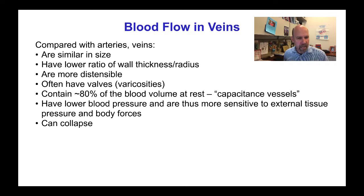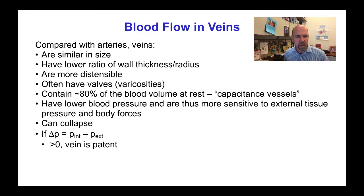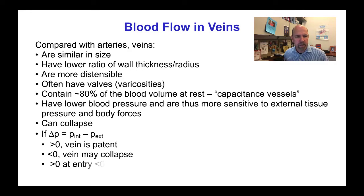Veins can collapse under negative pressures. If the pressure difference between the inside and the outside of the vessel is greater than zero then the vein is open or patent. If it's less than zero then the vein may collapse. If it's greater than zero at the entry but less than zero at the exit then you can get flow limitation or flutter.